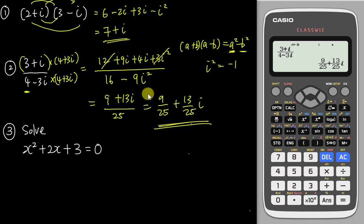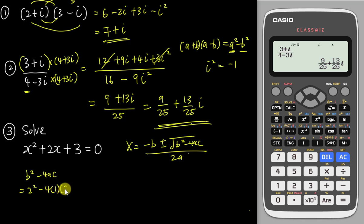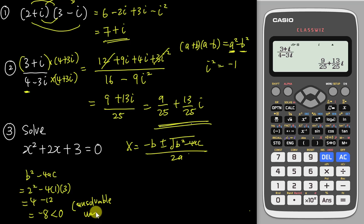Last example before I end this video: solving a quadratic equation with complex roots. We use the quadratic formula: negative b plus or minus square root of b squared minus 4ac, all divided by 2a. First we test the discriminant b squared minus 4ac. Here b is 2, so 2 squared minus 4 times 1 times 3 gives 4 minus 12 equals negative 8, which is less than zero. Normally we'd say this is unsolvable or undefined.